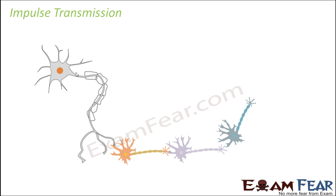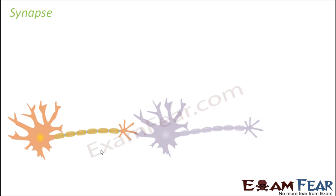By now we studied what happens when the axon gets excited or when the neuron gets excited — how the transmission or conduction takes place throughout the length of the axon. Now the question is how will it jump from one neuron to another? In order to understand that, we have to understand what is a synapse.